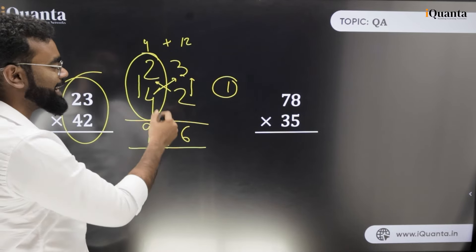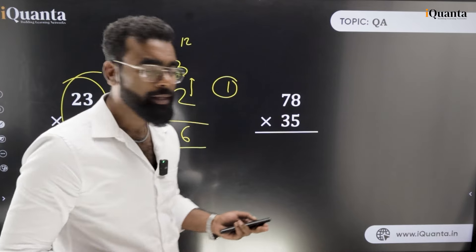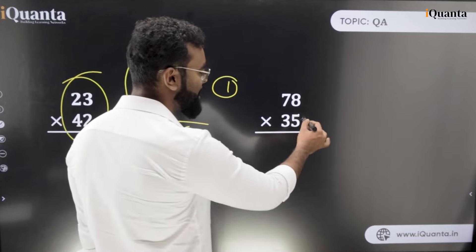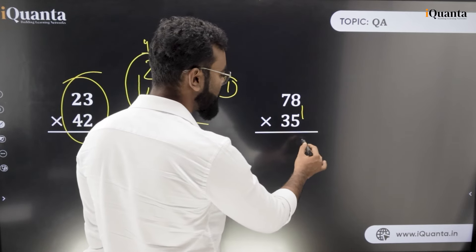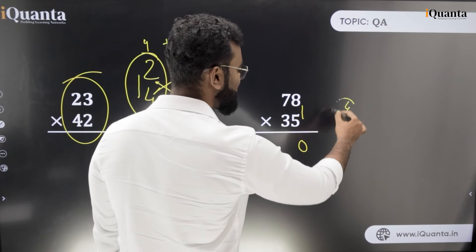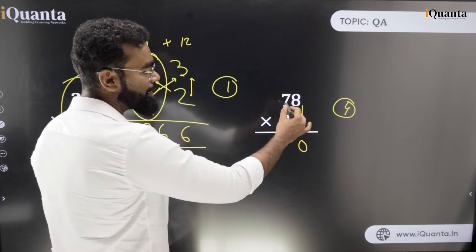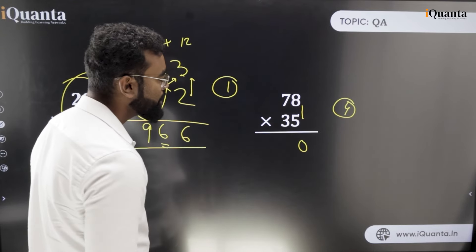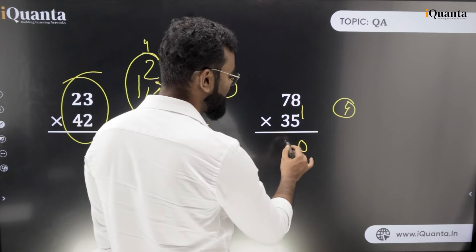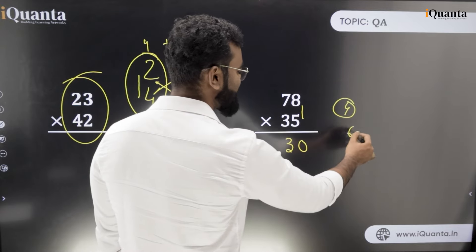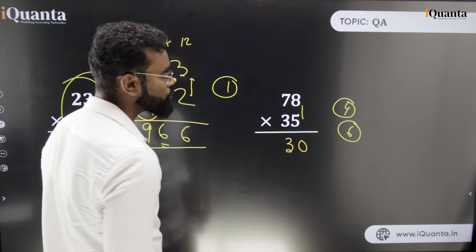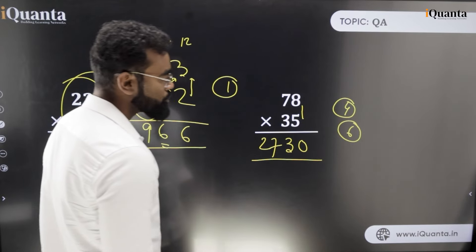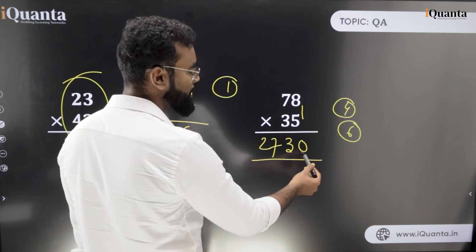Now let's try another example: 78 into 35. The first step is 5 into 8, which is 40 — write 0 and carry 4. Next is 5 into 7 is 35, plus 3 into 8 is 24, so 35 plus 24 is 59, plus the carry of 4 is 63 — write 3 and carry 6. Then 7 into 3 is 21, plus 6 is 27 — write 27. So the answer is 2730.